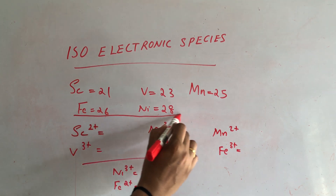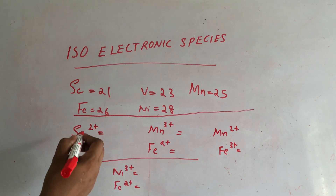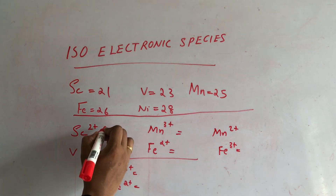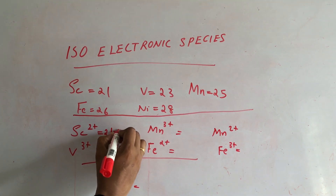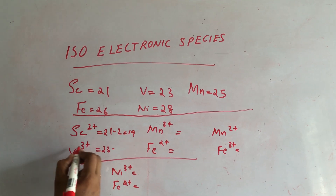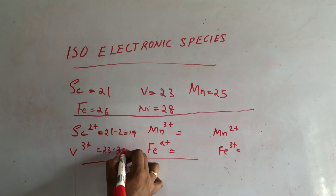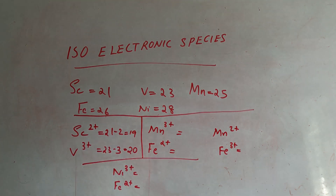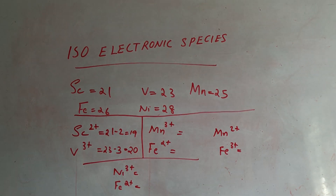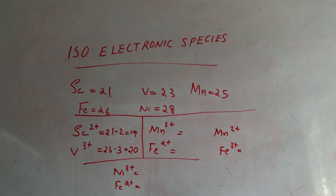Let's see if we have a pair of isoelectronic species. Scandium (Sc) has atomic number 21. SC2+ gives 21 minus 2 equals 19 electrons. V3+ has atomic number 23; 23 minus 3 equals 20 electrons. These are not isoelectronic, because the number of electrons must be the same for isoelectronic species.